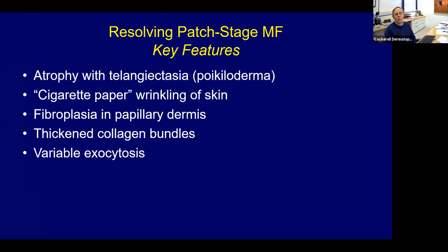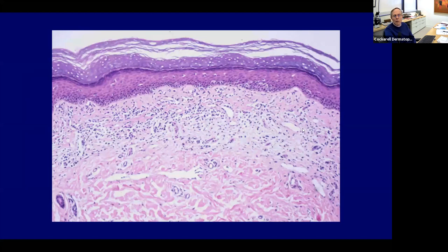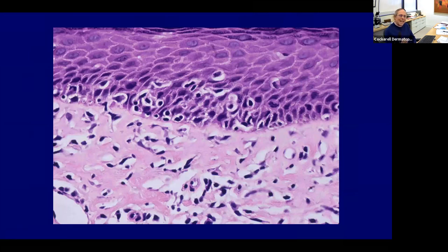If you see a late stage lesion of mycosis fungoides where the skin becomes atrophic — telangiectasia, atrophy, cigarette paper wrinkling — when you biopsy that, you'll see fibroplasia in the papillary dermis with thick collagen bundles and a variable amount of exocytosis. Whenever you see poikiloderma, you should put mycosis fungoides in the differential diagnosis. Notice the virtual absence of spongiosis and a greater number of lymphoid cells than spongiosis. That ratio favors mycosis fungoides in the right clinical context.